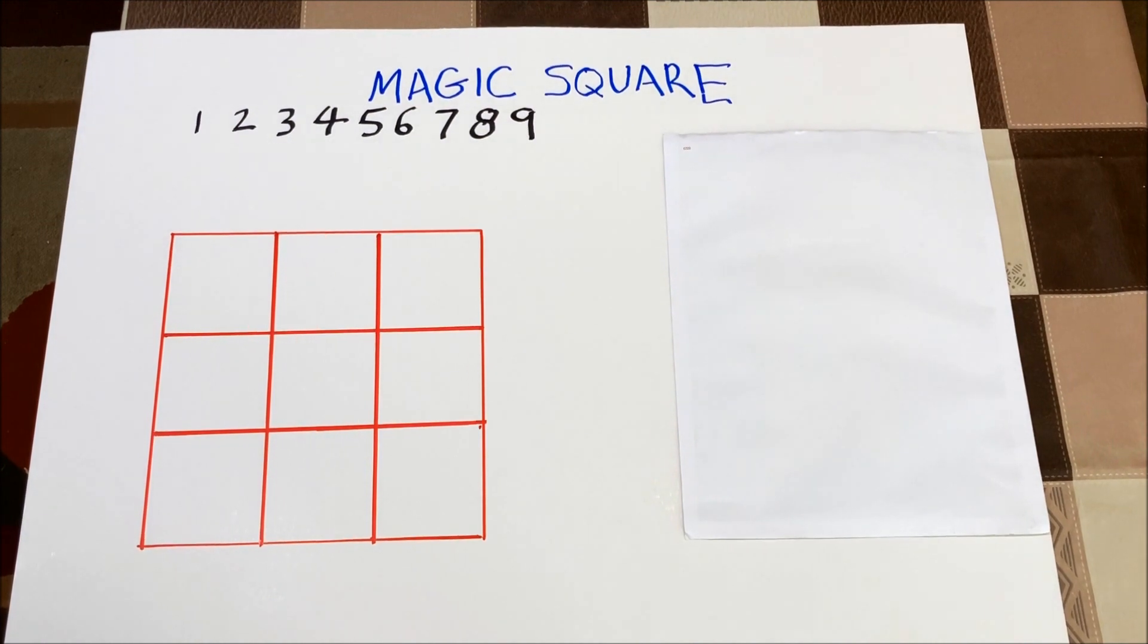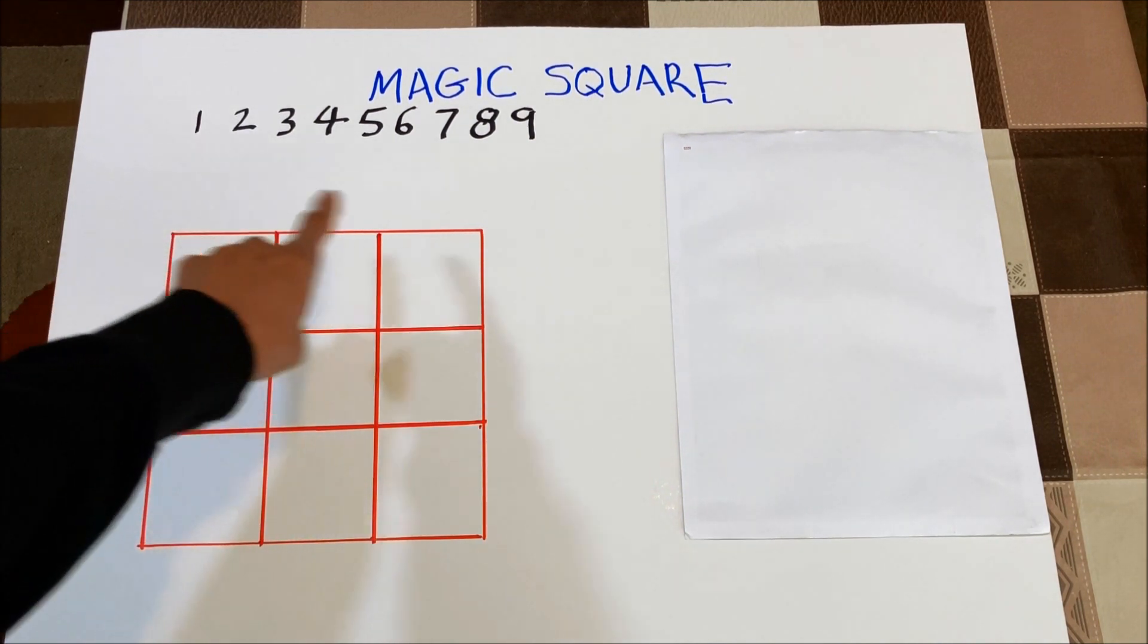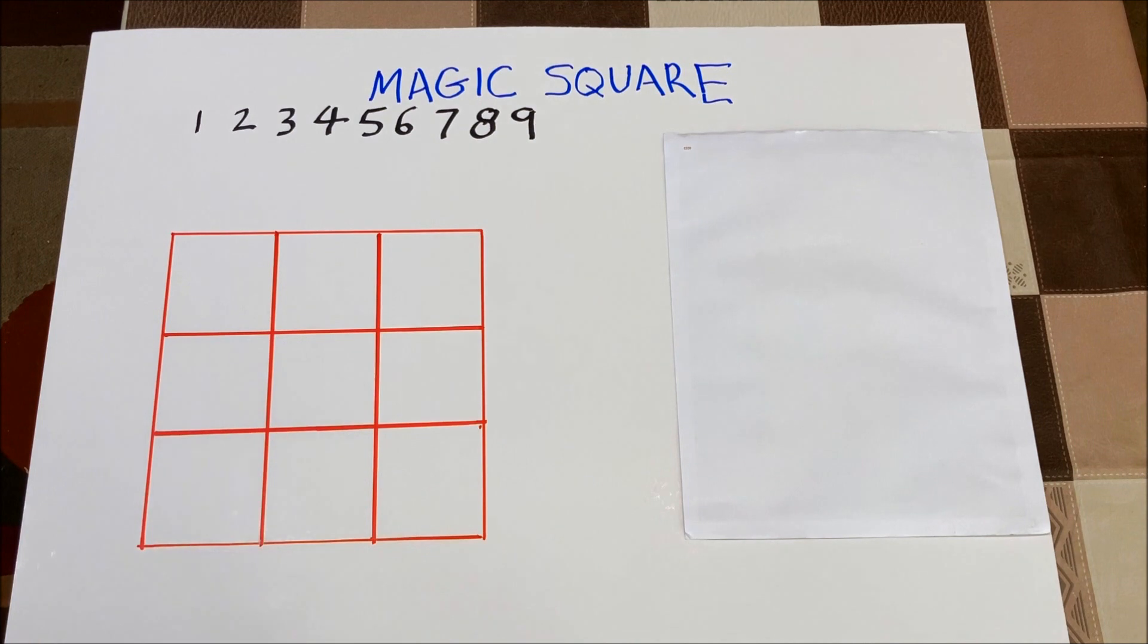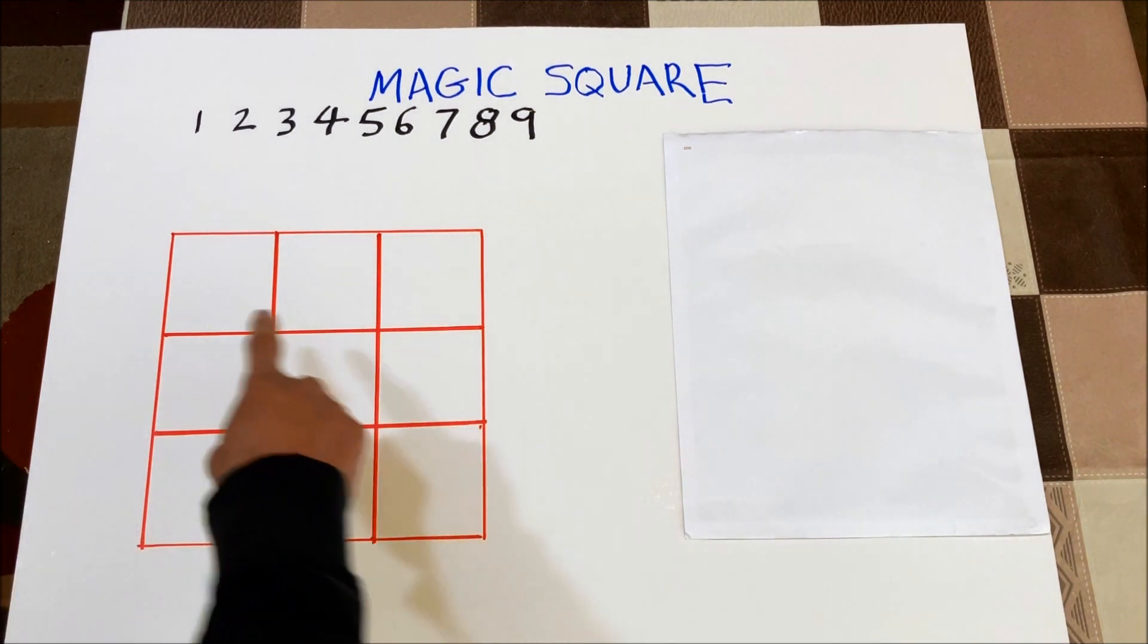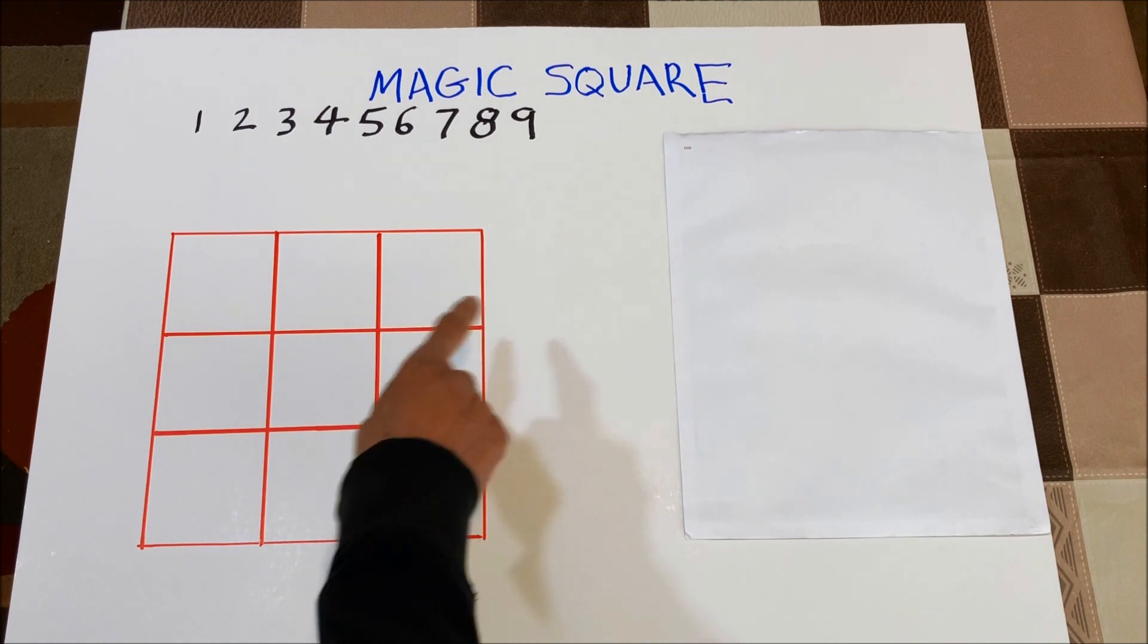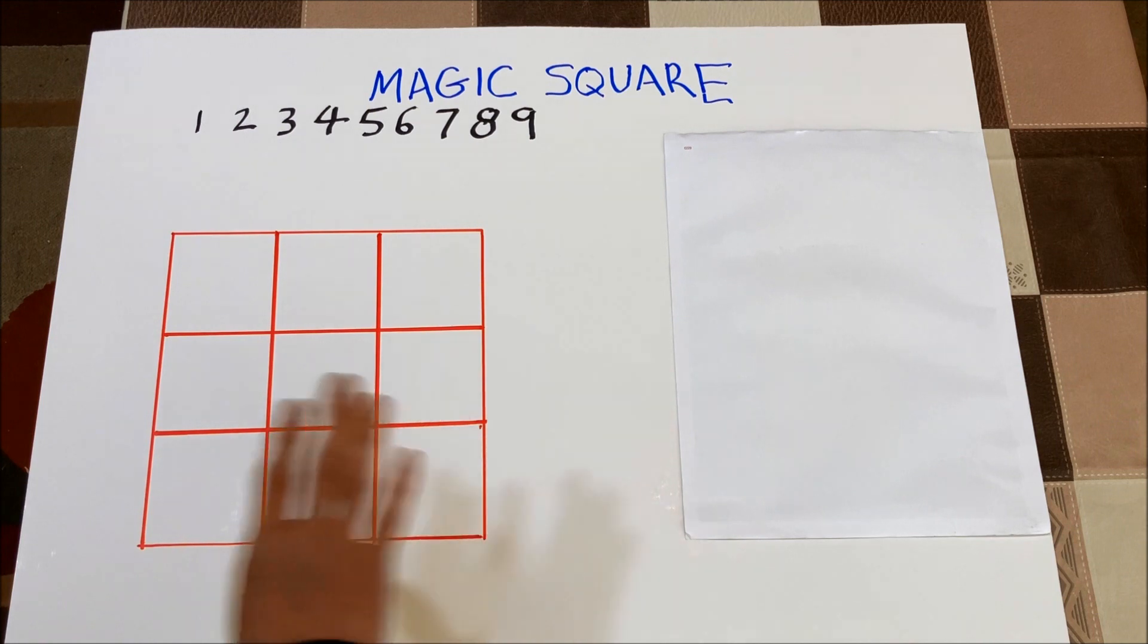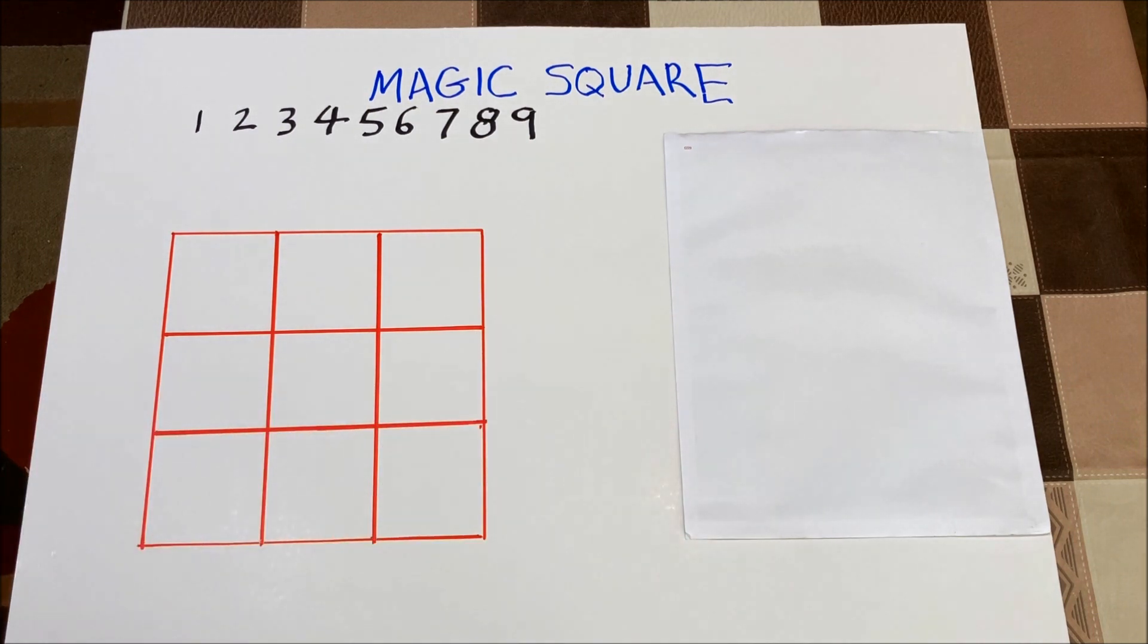I'm going to quickly solve this magic square. The rule of the magic square: use the numbers from 1 through 9 only once and put them in these squares so that every direction horizontally, vertically, and diagonally comes out to the same number.